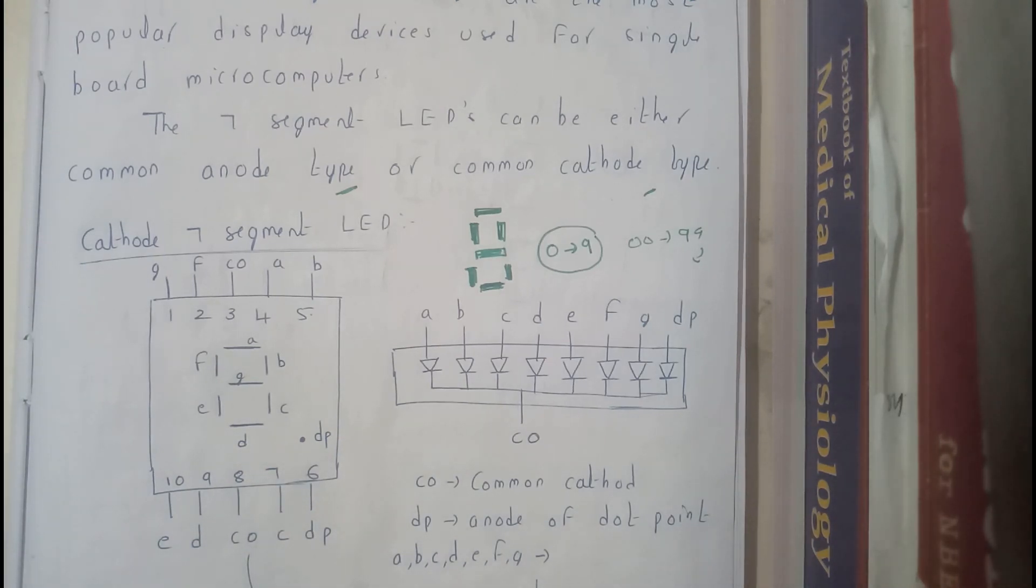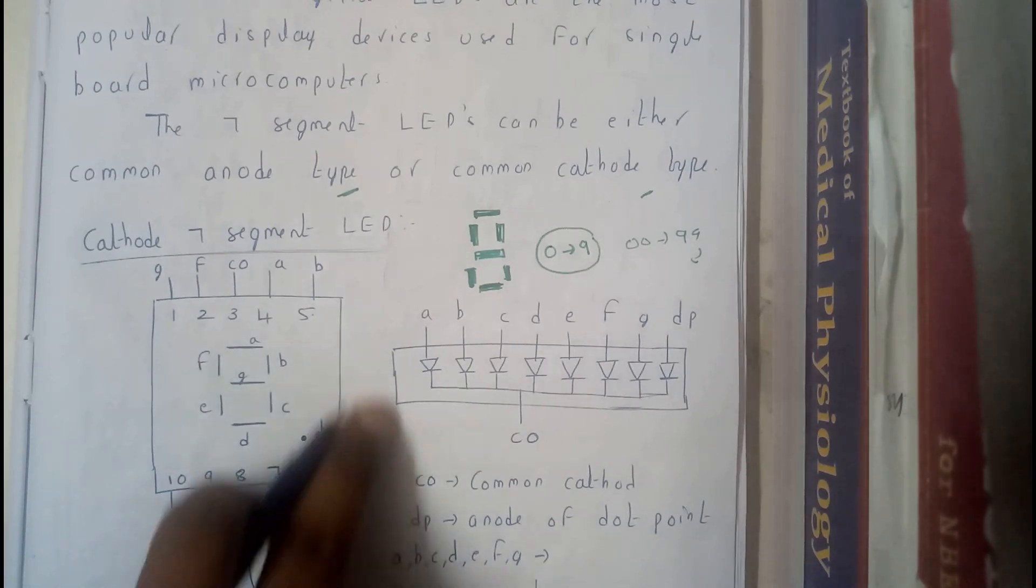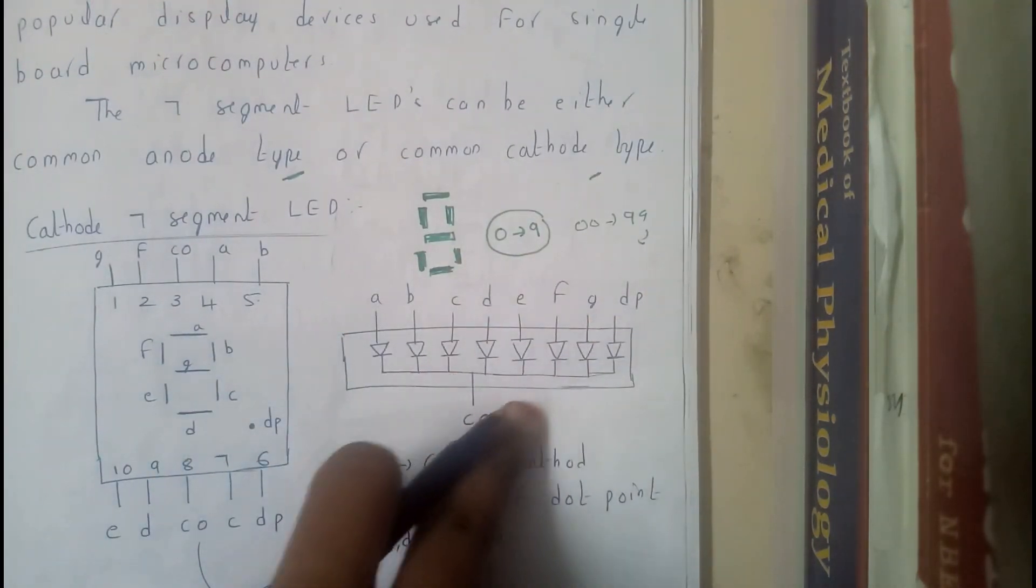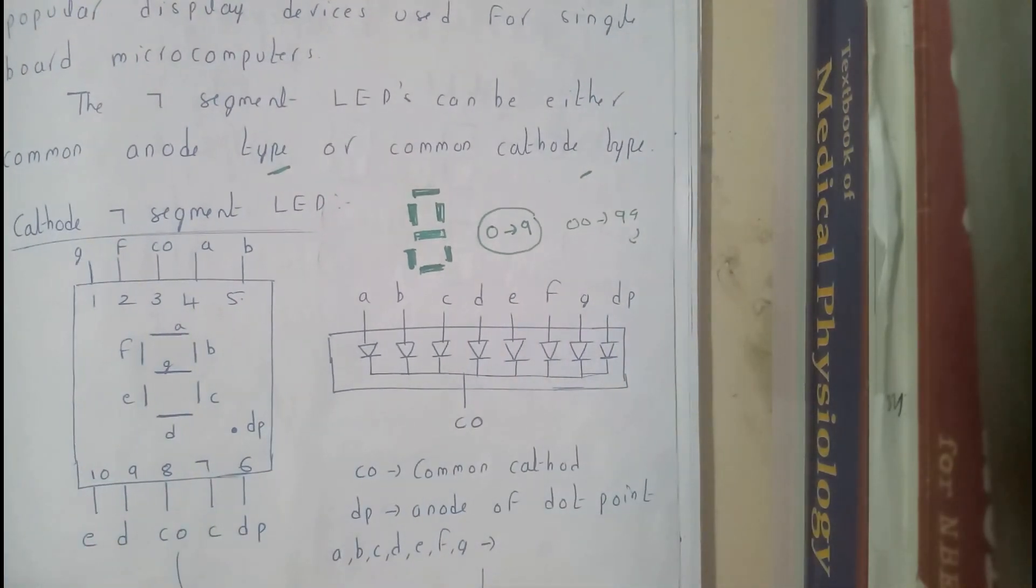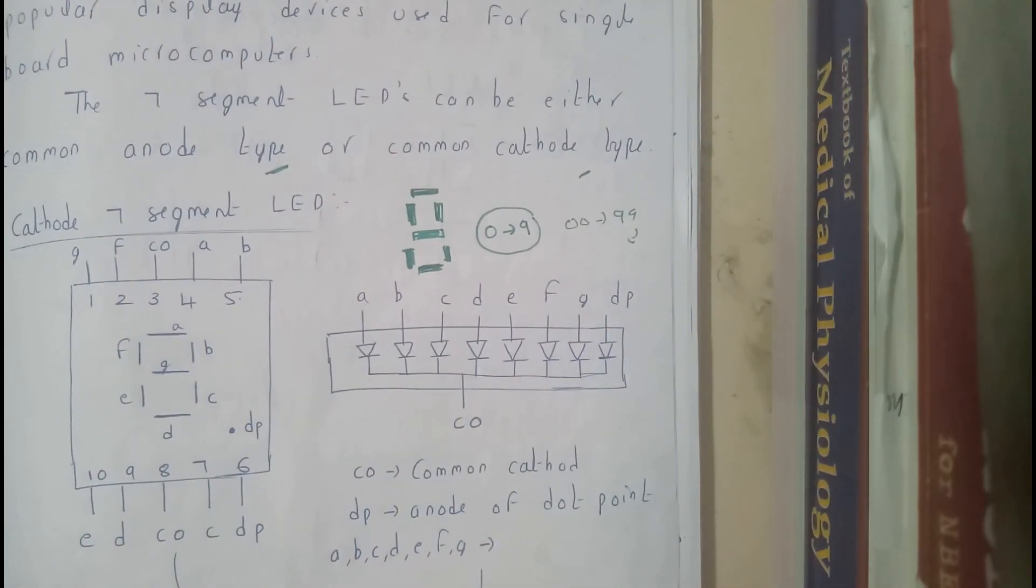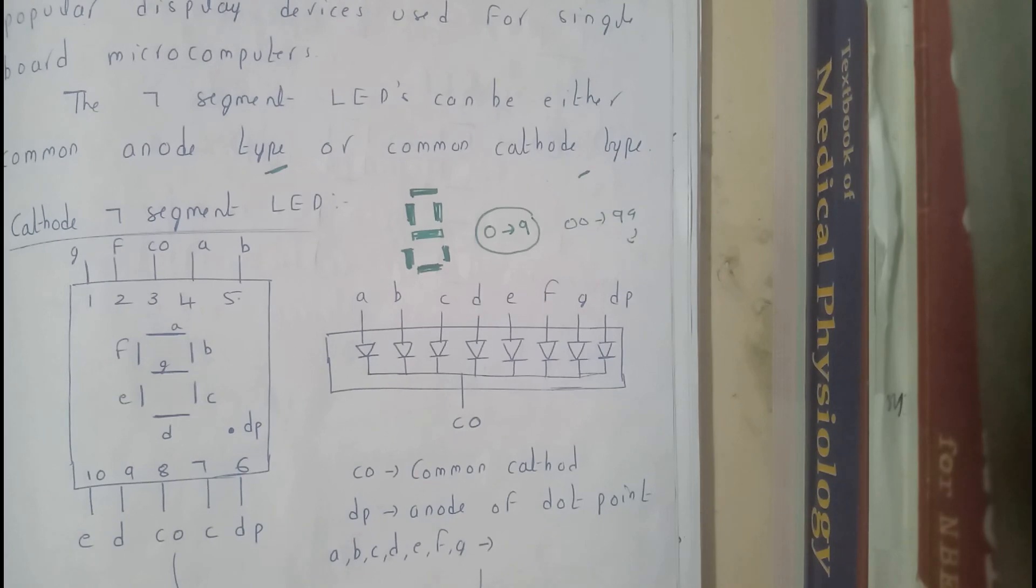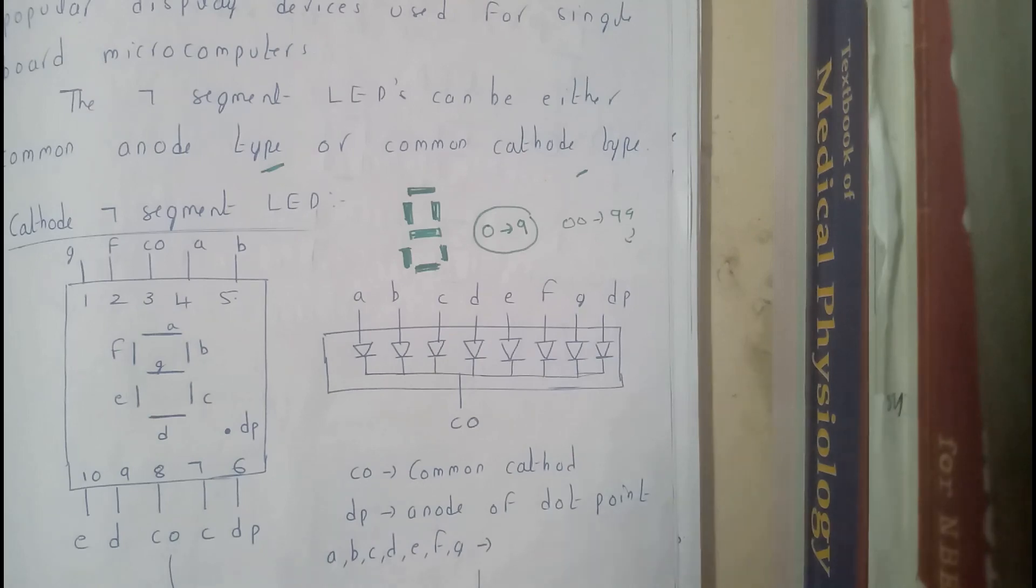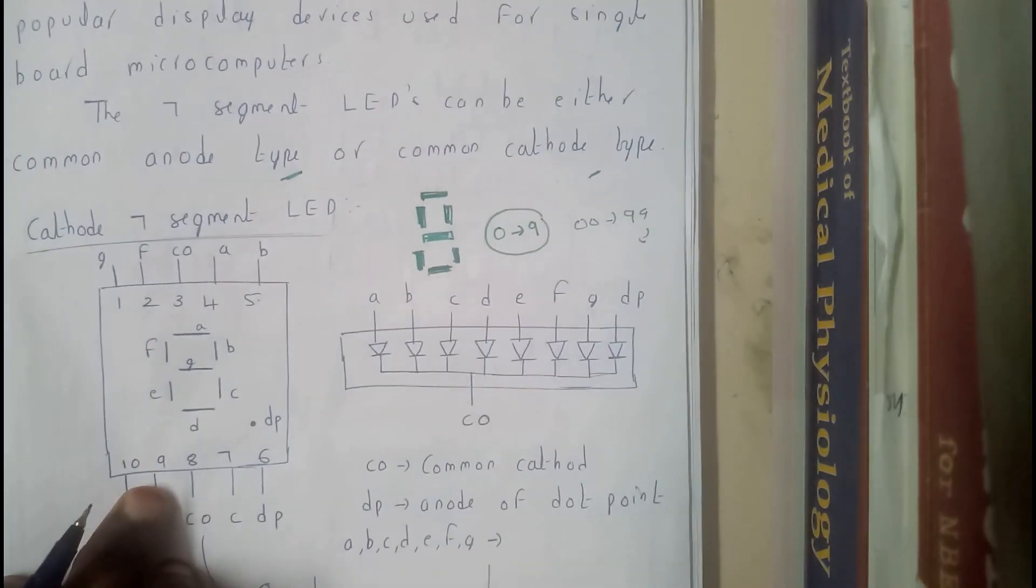So now I hope everyone got a small idea on the cathode representation. If you want to represent that in terms of a scale or what we will be calling this, I think mostly we'll be calling it as a scale. Let me check it out once.